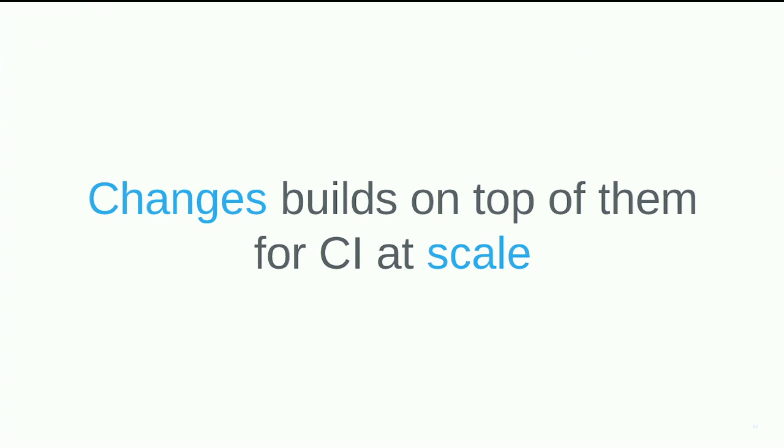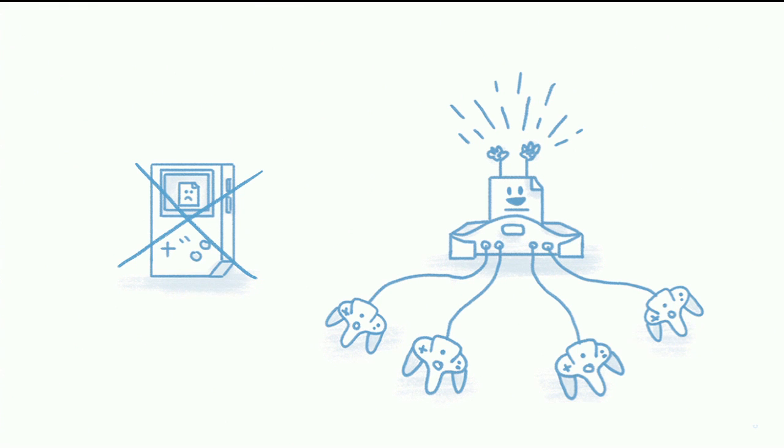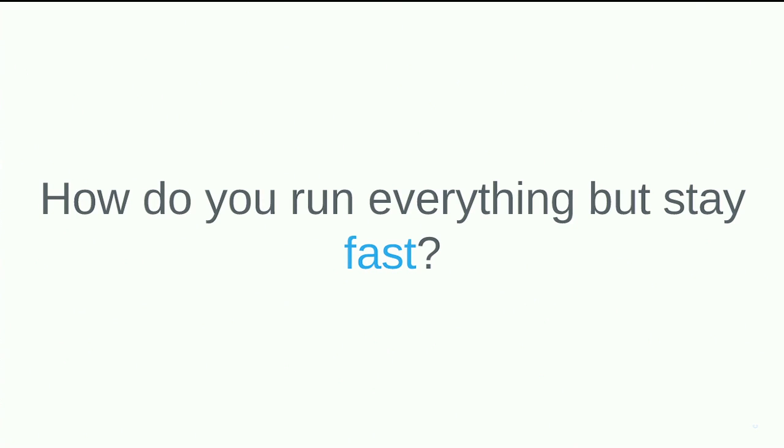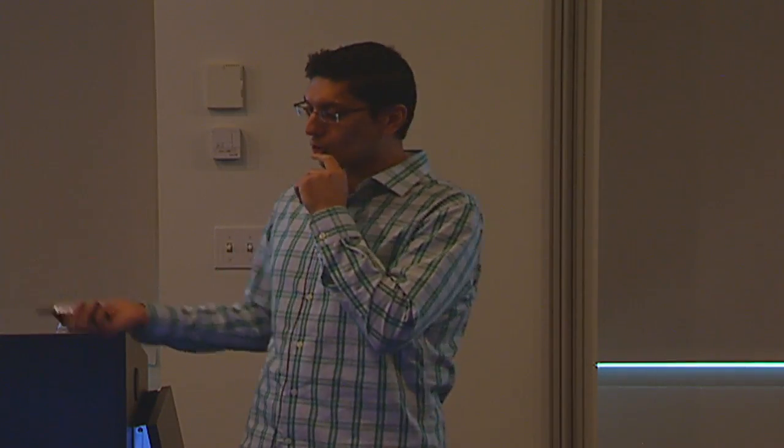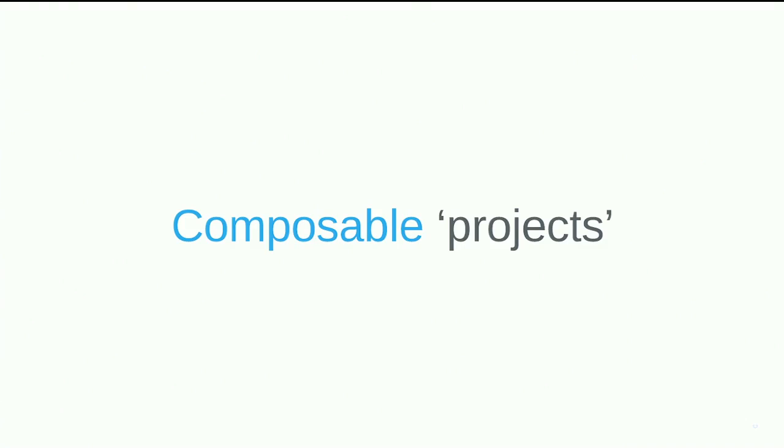We have a system that will let us run a lot of tests and handle a lot of load. But we want it to be fast without spending a ton of money — this is where controlling the amount of workloads comes in. A lot of this is ideas we have for building features into Changes and is active discussion. One thing we're thinking about is the idea of composable projects. Changes already has a concept of a project where you associate a bunch of tests with some settings and notification preferences.